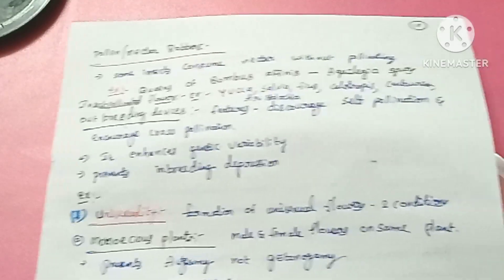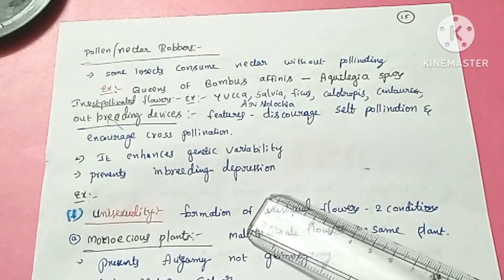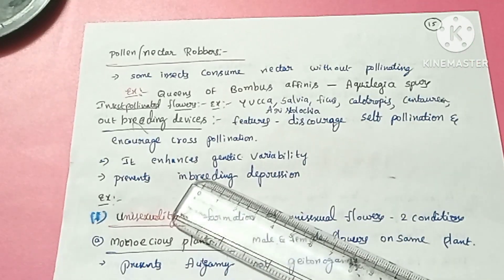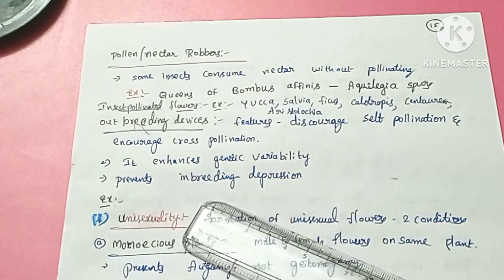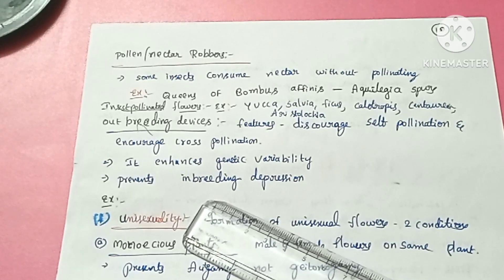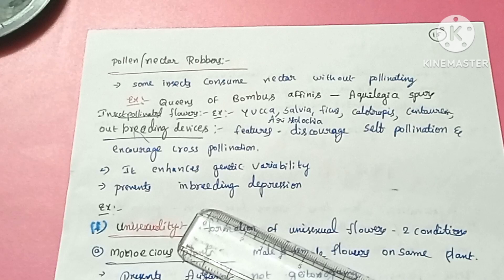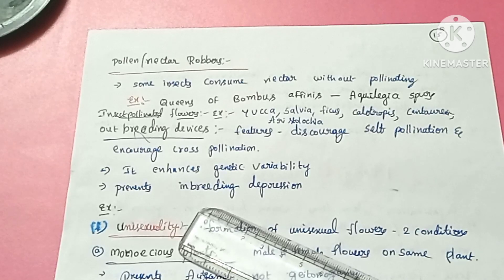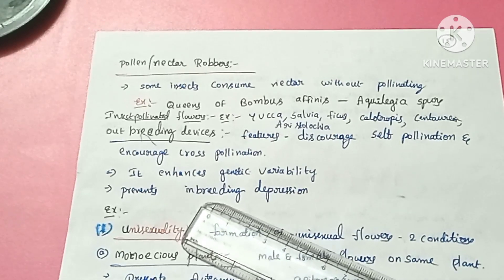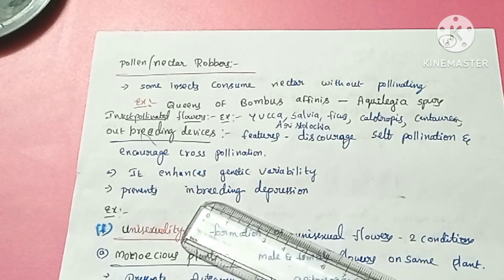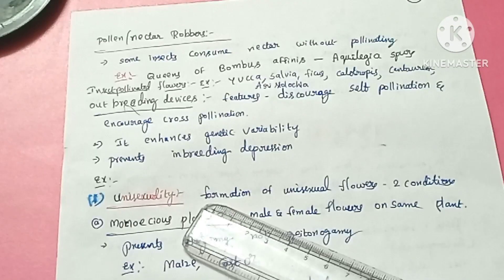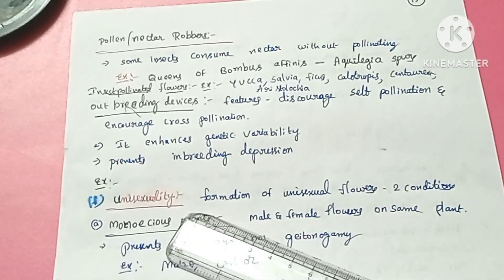Continuous self-pollination leads to inbreeding depression in plants. To prevent this, plants use outbreeding devices. So let us see what the outbreeding devices are.